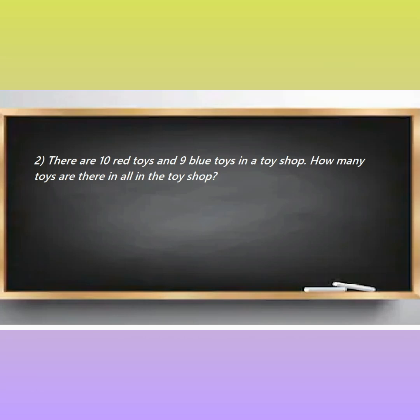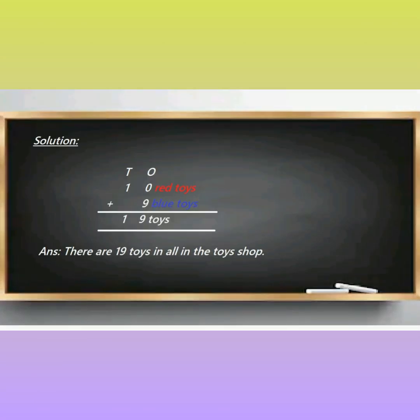Let's solve the sum. First, solution. Then, ones, tens. After that, ten red toys. Addition sign. Nine blue toys. So, ten plus nine equals nineteen toys. After that, answer. There are nineteen toys in all in the toy shop.